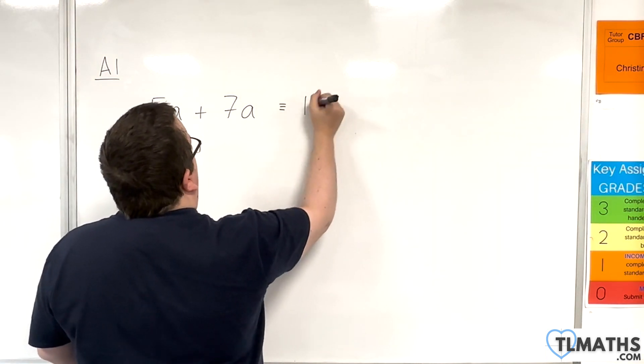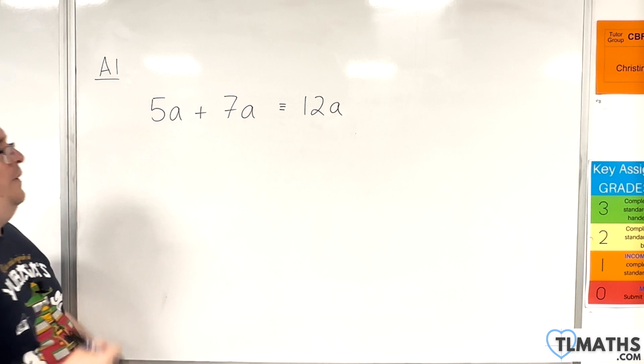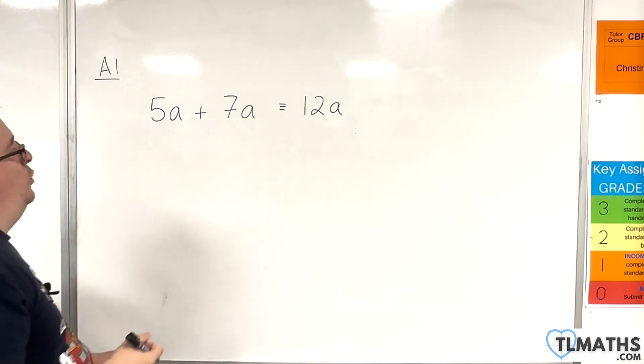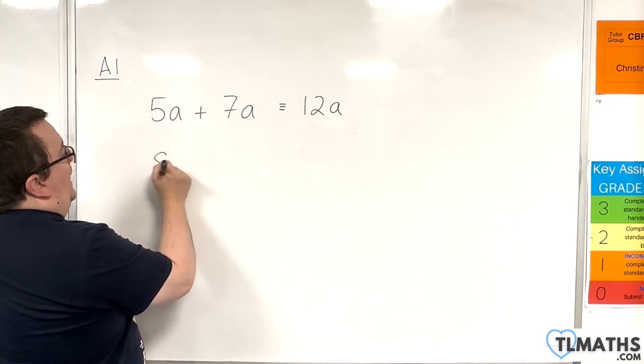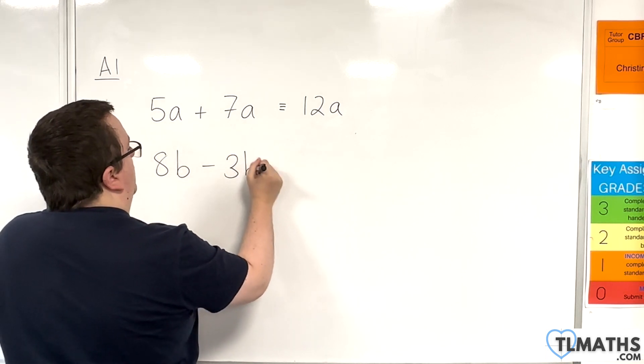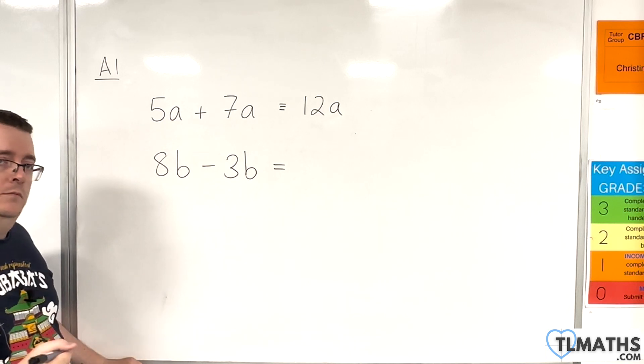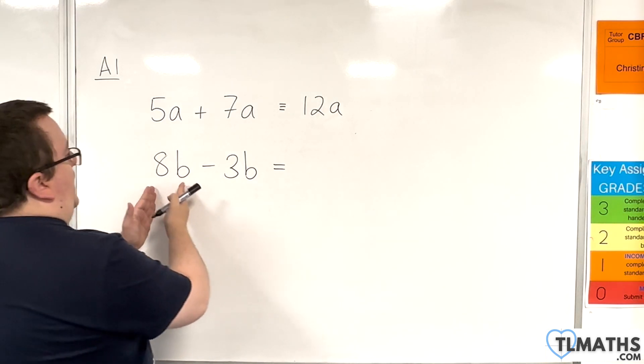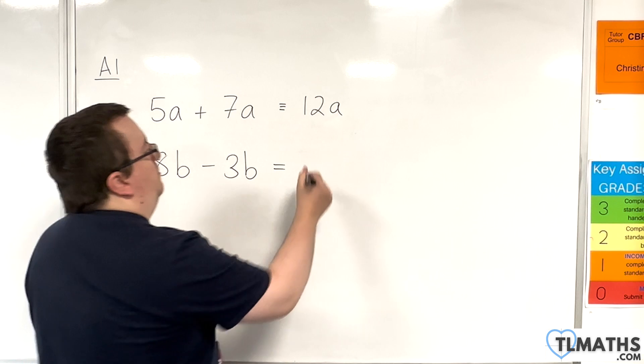So this is identical to 12a. Fine. I could have, let's say I've got 8b's, and then I subtract 3b's. Okay, so I've got 8b take away 3b, and so that'd be 5b.